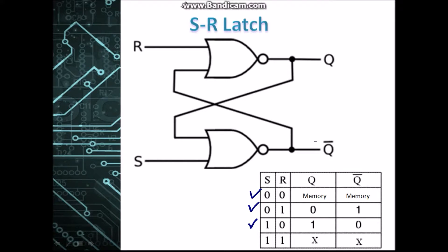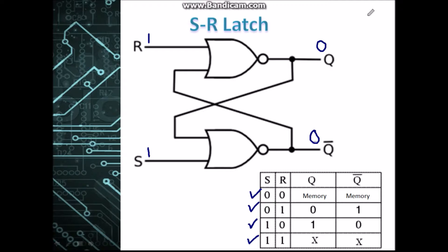Now when R is 1 and S is 1, a 1 into a NOR gate gives us 0, and a 1 into a NOR gate also gives us 0. We see that both outputs are 0, and this is an invalid state, because as mentioned earlier the outputs must complement each other — one must be 1 and the other must be 0.